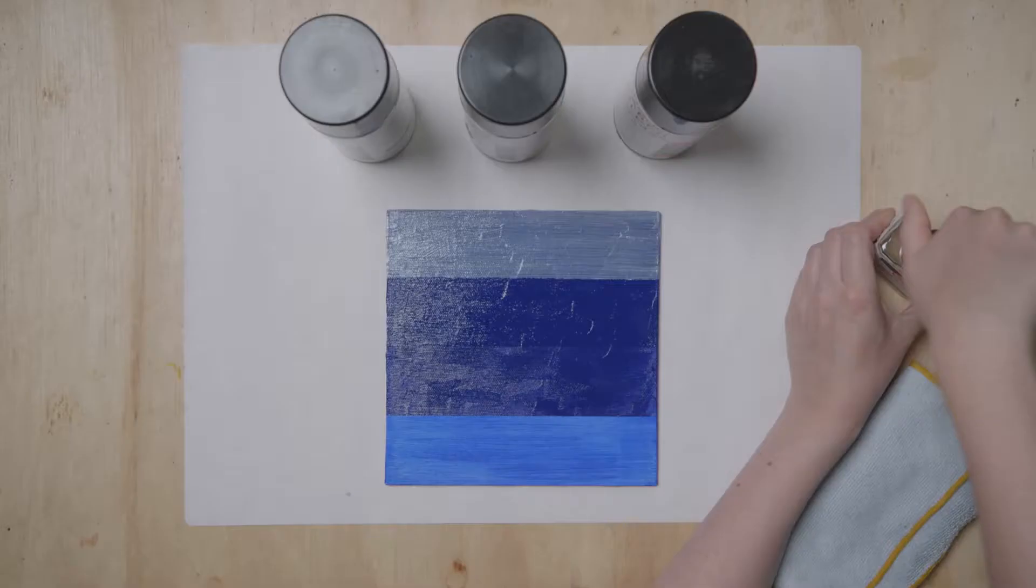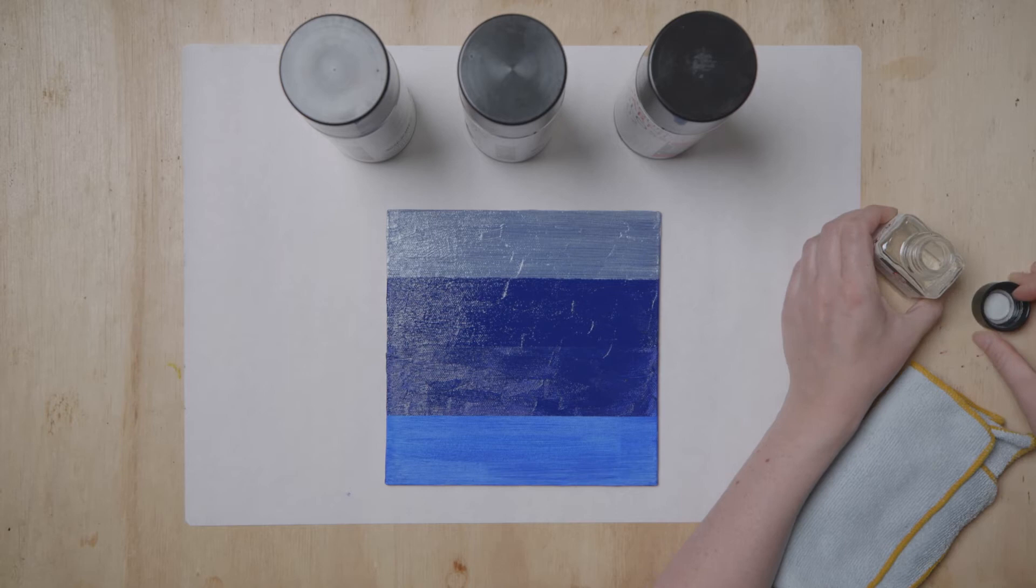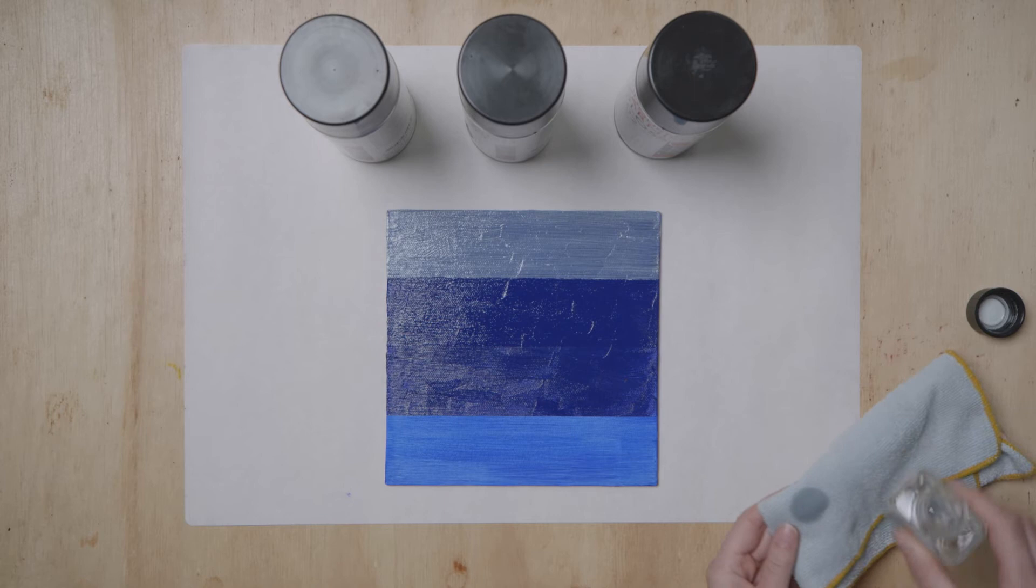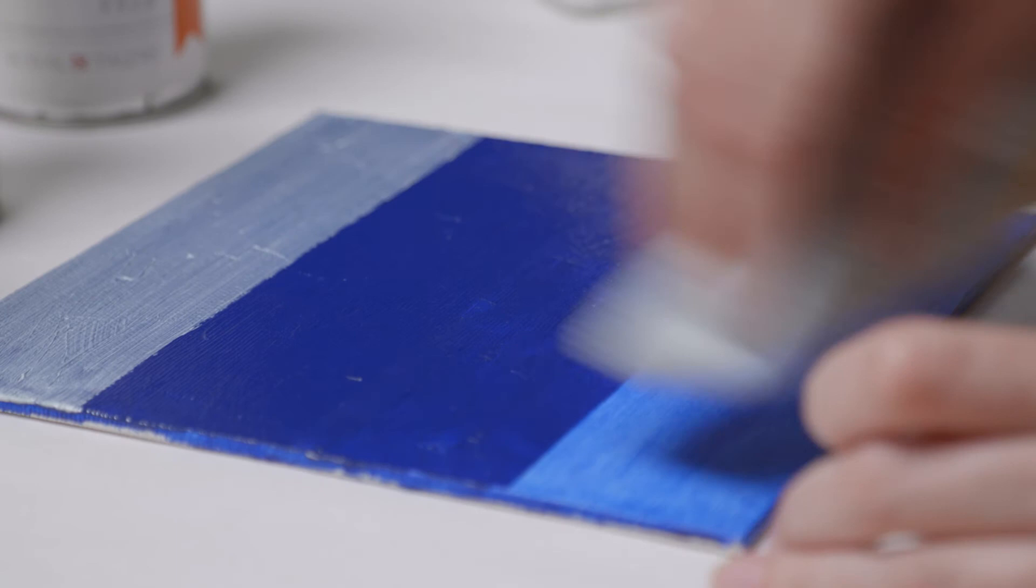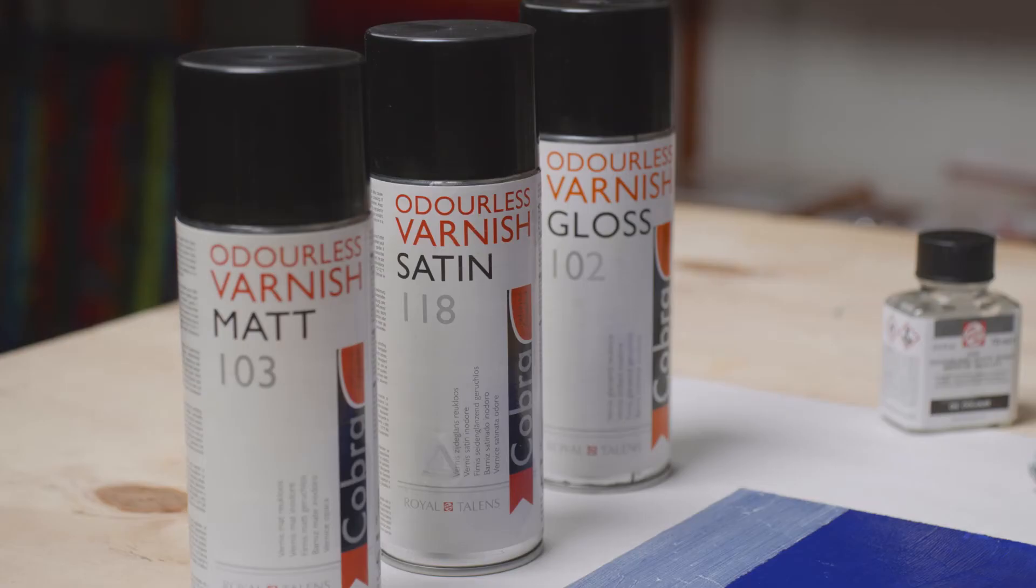Before you start varnishing, it is important that both the spray can of varnish and your canvas are in the same room for a few hours in advance. This allows them both to come to the same temperature, which prevents condensation from forming on your work and a white film from being produced under the varnish after varnishing.